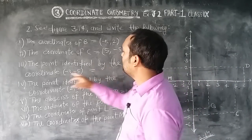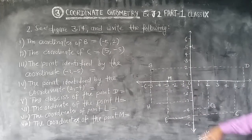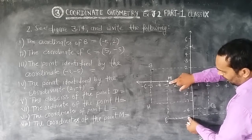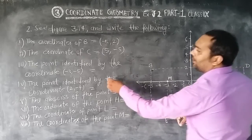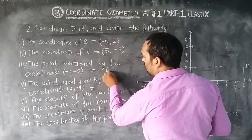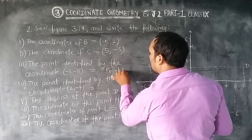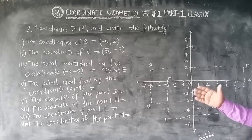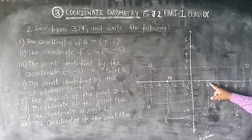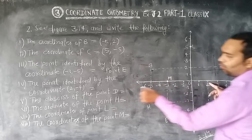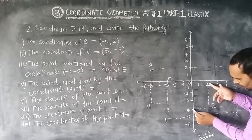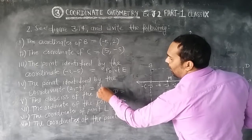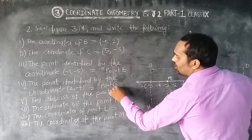Third: the point identified by the coordinates (minus 3, minus 5) — x equals minus 3 and y equals minus 5. Where do these two values meet? They meet at point E. Fourth: the point identified by the coordinates (2, minus 4) — x equals 2 and y equals minus 4. These two points meet at point G.